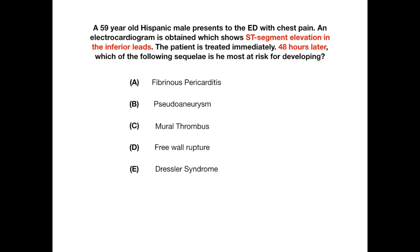We're 48 hours past the initial myocardial infarction, so you have to know what complication to expect at that point. The answer is fibrinous pericarditis. Fibrinous pericarditis is the evolution of the myocardial infarction that happens one to three days after the initial insult.